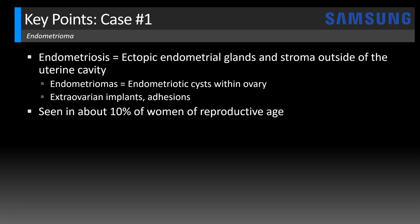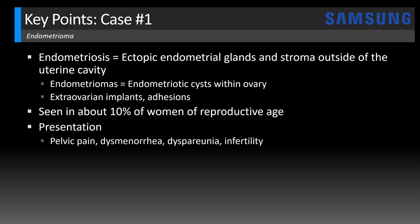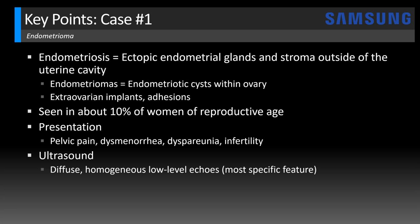Endometriosis is seen in about 10% of women of reproductive age. The presentation is variable but often includes some combination of pelvic pain, dysmenorrhea, dyspareunia, and infertility. On ultrasound, the most specific appearance is diffuse homogeneous low-level echoes throughout the mass, yielding a ground glass configuration. It's also not uncommon to see posterior acoustic enhancement or increased through-transmission.